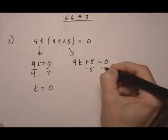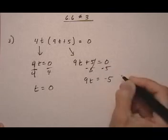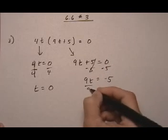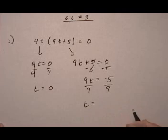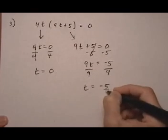And the next one, if we take away five, we get nine T equals minus five. Divide by nine. T equals minus five over nine.